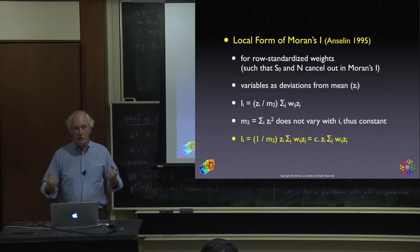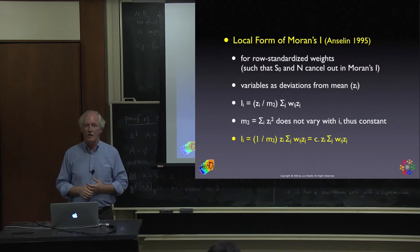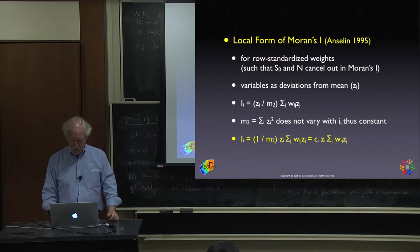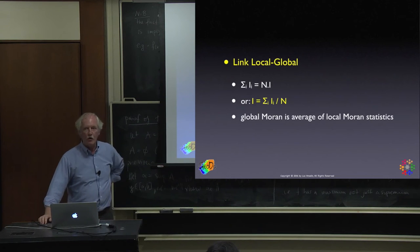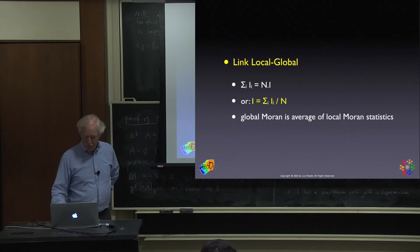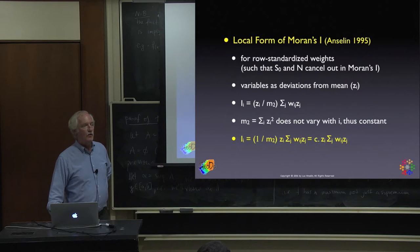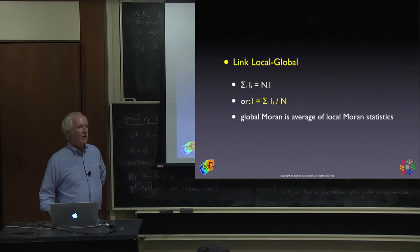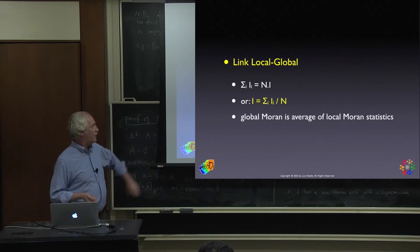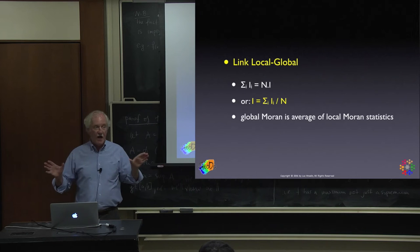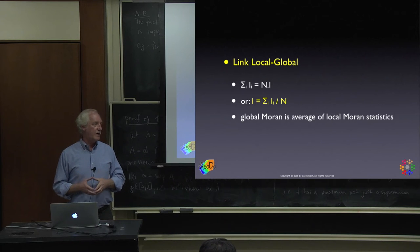We can compute the local Moran statistic, but knowing whether it's significant is not simple. If you take all individual local Moran statistics and add them up, they are basically a multiple of the global statistic. Flipping this around, the global Moran's I statistic is the average of all the local Moran's I statistics — a simple but important algebraic connection.